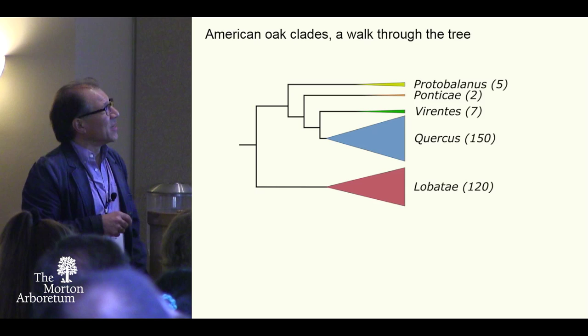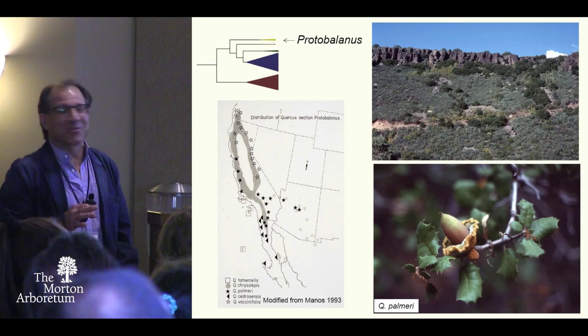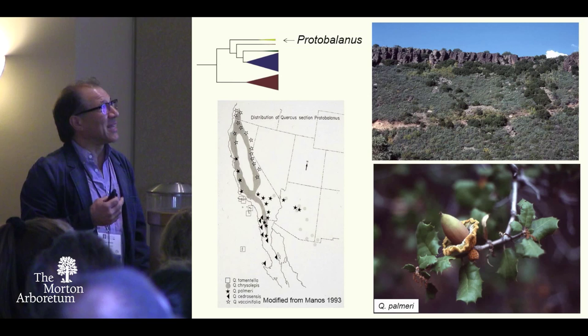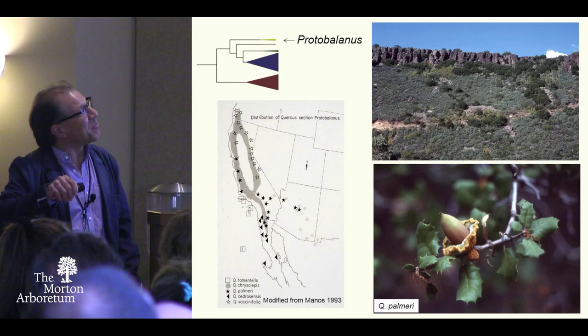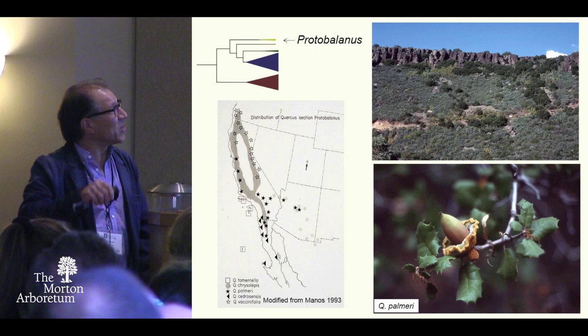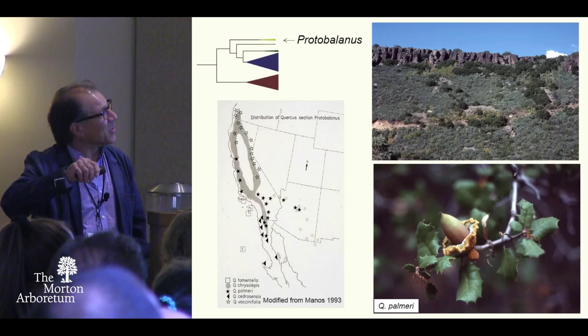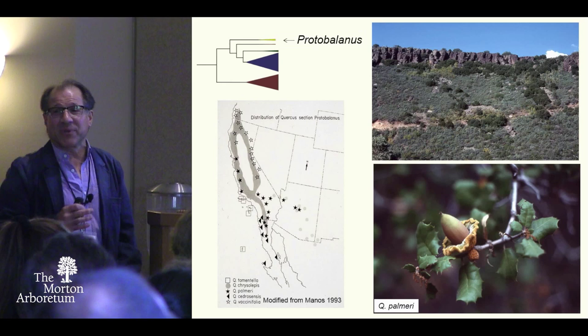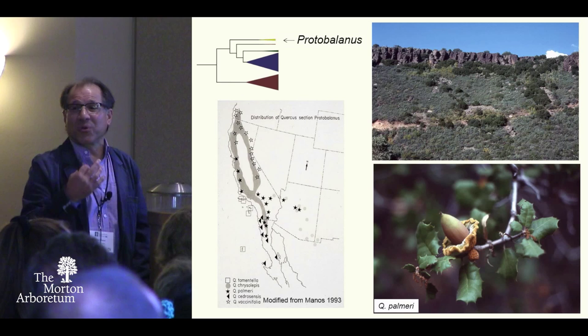Here's the walk through the tree. Protobalanus — I worked on these for my dissertation; they're a great group, but really just five species. They stand out as being truly evergreen oaks. Here they are on this landscape in Arizona — those dark trees are Quercus chrysolepis, a really widespread oak throughout western North America: California, Arizona, and trickling down into Baja. This is Quercus palmeri, my favorite of the group, which has the holly-like look. The early experts thought these connected to some of the sclerophyllous oaks we know from Eurasia.